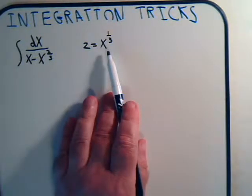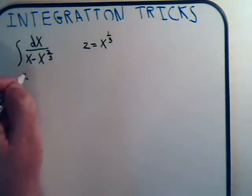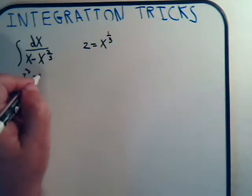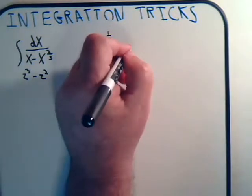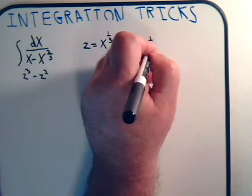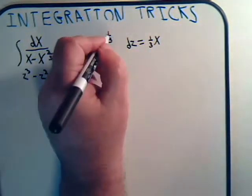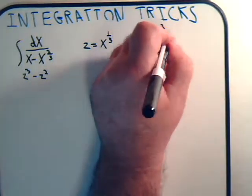So if z equals x to the one-third, that's z cubed minus z squared. And now dz equals one-third x to the minus two-thirds dx.